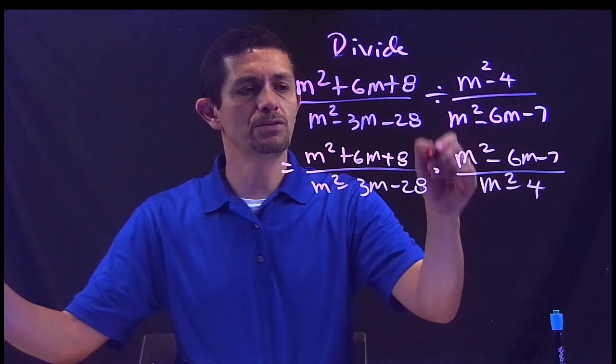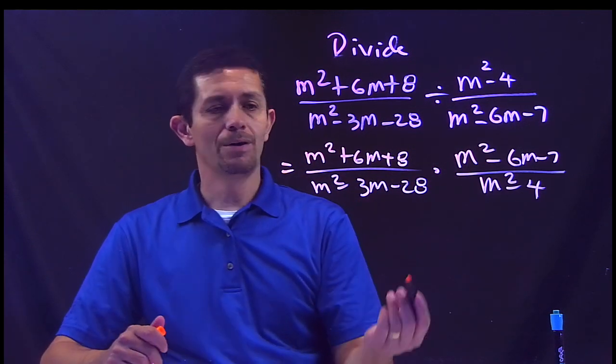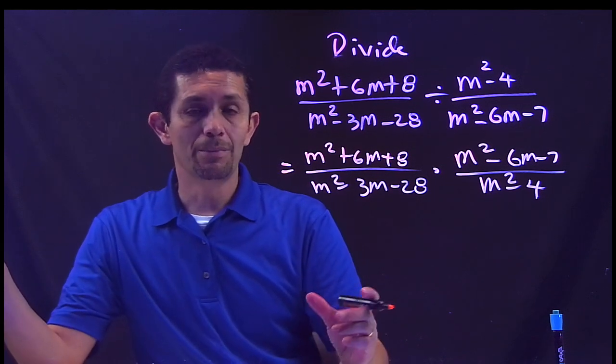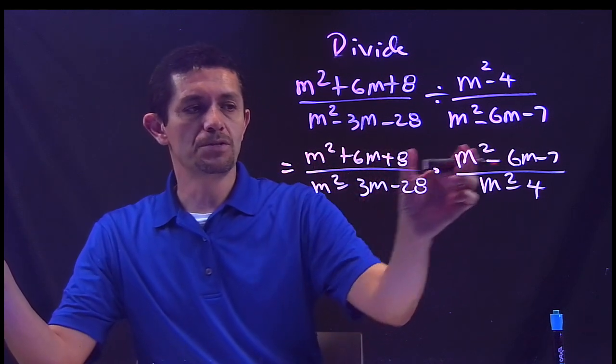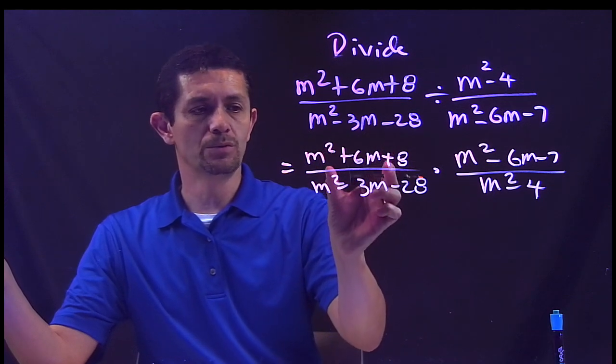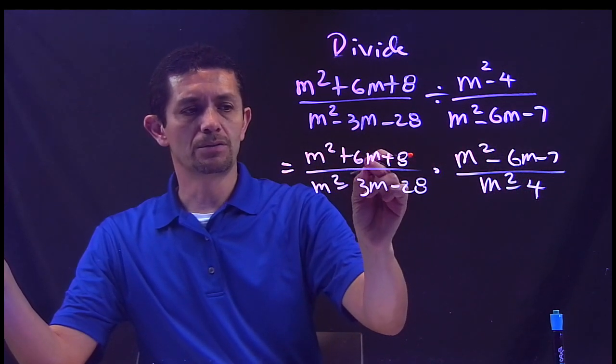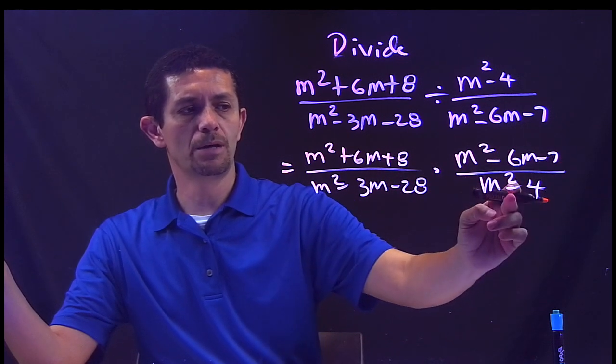And now instead of division it's multiplication. Okay, now I see a lot of expressions, so the next step is to factor every single expression: trinomial, trinomial, trinomial, binomial - difference of squares.